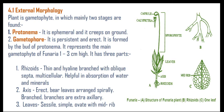The axis is erect and bears leaves arranged in a spiral manner. Branches are extra-axillary. The leaves on these branches are sessile (without stalk), simple, with a single leaf lamina which is entire. The shape of the leaves is ovate with one midrib.